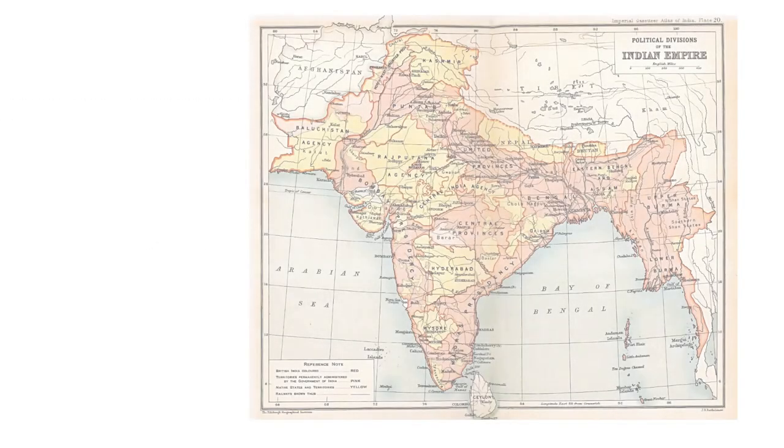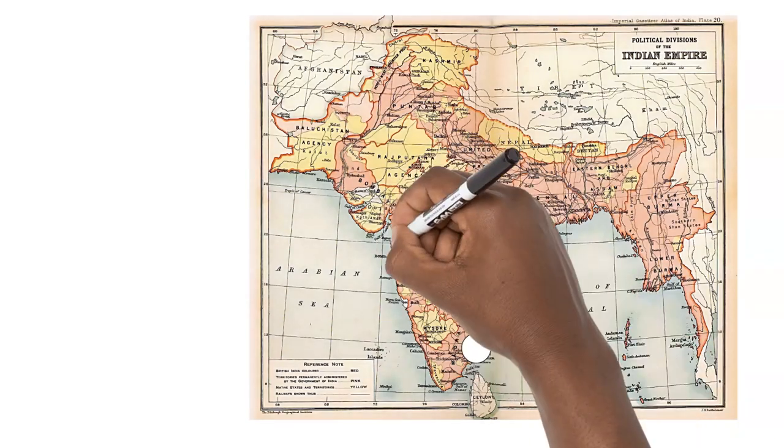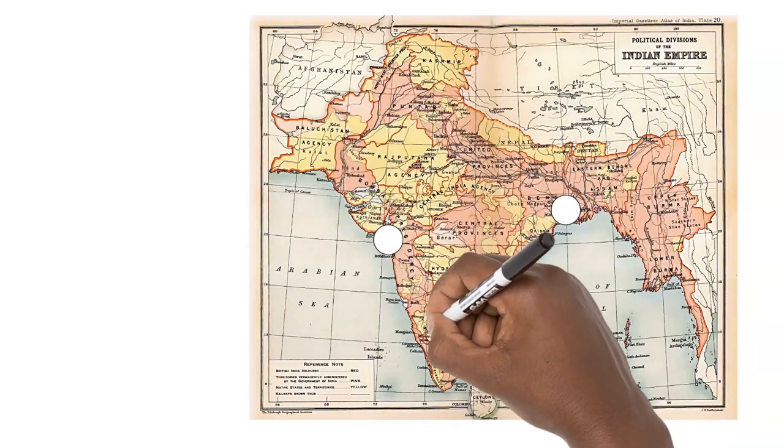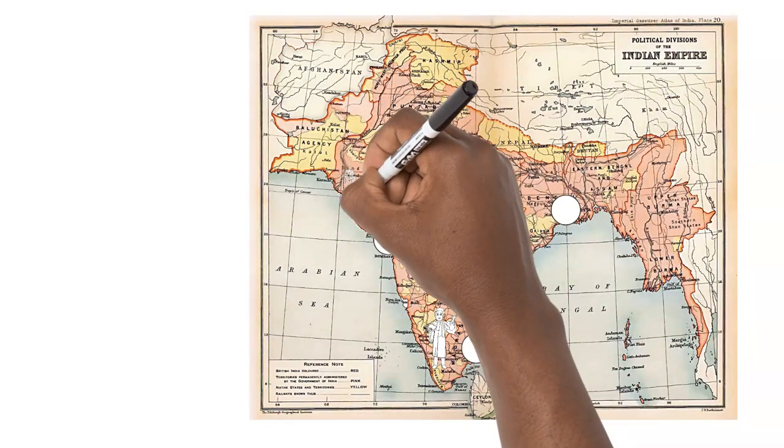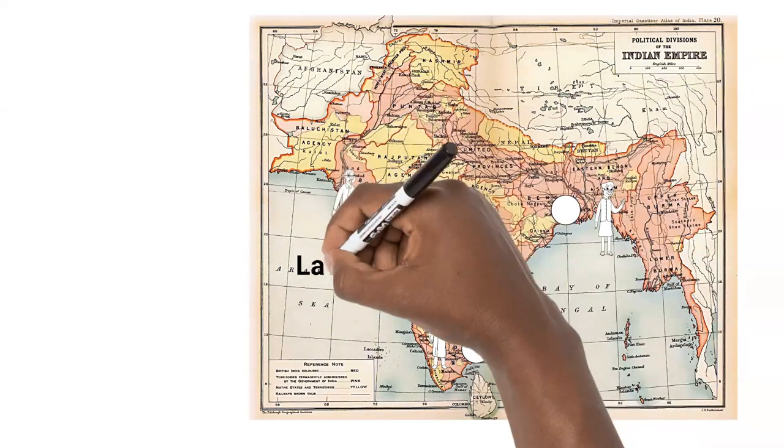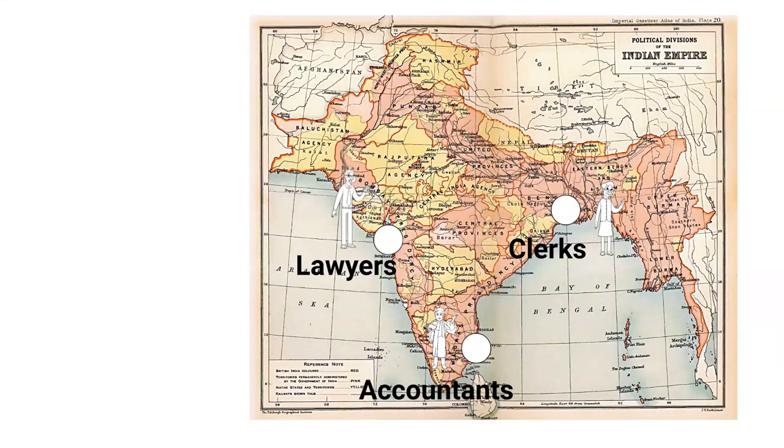Starting around the 1820s and 1830s, Indians trained in English language and culture began to emerge from new colleges in presidency towns like Madras, Bombay and Calcutta. They went on to become the accountants, clerks, lawyers and civil service officers that the British relied on to keep the colonial state ticking.